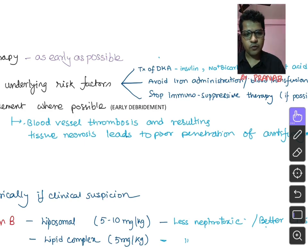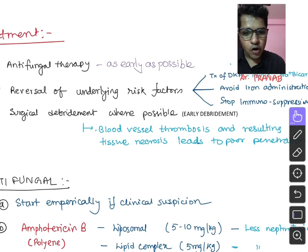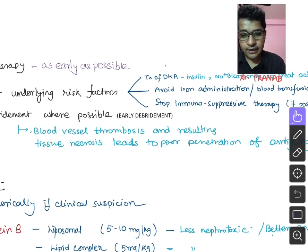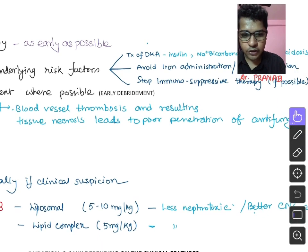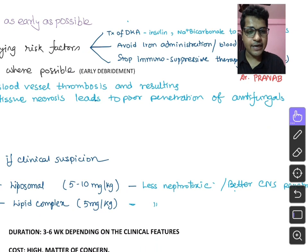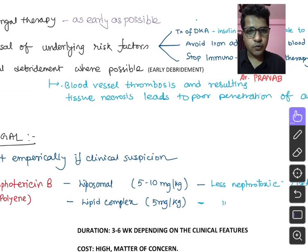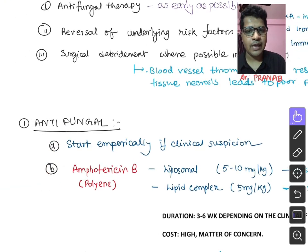Surgical debridement: wherever possible, necrotic mucormycosis tissue should be debrided, because mucormycosis is notorious for causing blood vessel thrombosis resulting in tissue necrosis, which leads to poor penetration of antifungal drugs. The drug may be given but will not reach the areas where mucormycosis is lying, worsening the disease. We must always try to debride non-salvageable areas.